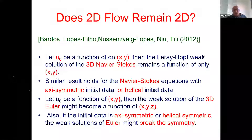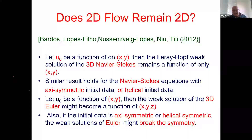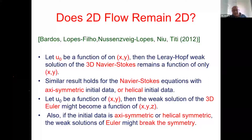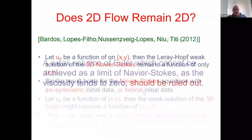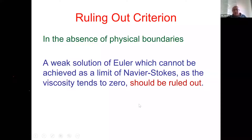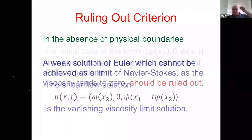Weak solutions of Euler that cannot be achieved as limits of Leray-Hopf weak solutions of Navier-Stokes as viscosity goes to zero should perhaps be ruled out as physical solutions. In particular, solutions starting as functions of x, y that become functions of x, y, z are not limits of Leray-Hopf solutions. Similarly, symmetry-breaking solutions should be ruled out. The shear flow example supports this: Navier-Stokes with that initial data has only the shear flow as the vanishing viscosity limit.